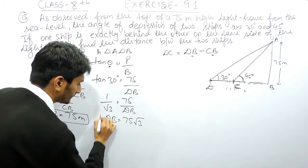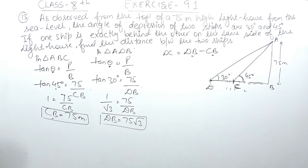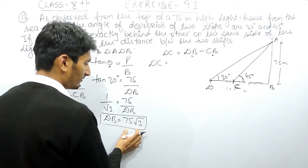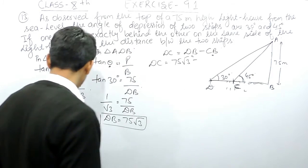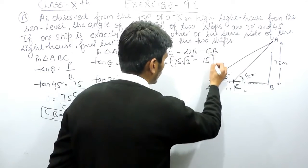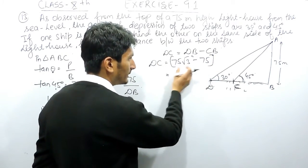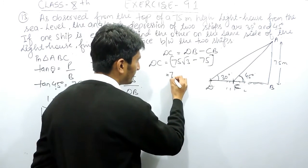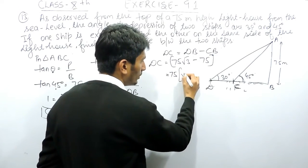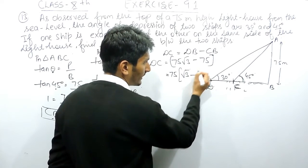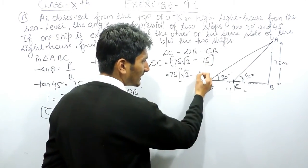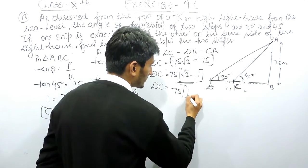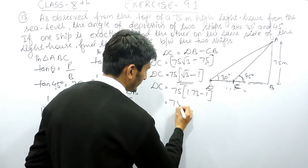Cross-multiplying, DB equals 75 root 3. Now I have to find the distance between the two ships, which is DC. That equals DB minus CB, so DC equals 75 root 3 minus 75. To solve this, take 75 common, giving 75 multiplied by (root 3 minus 1).